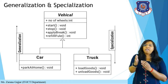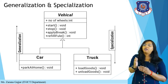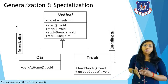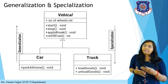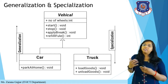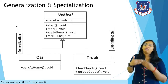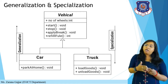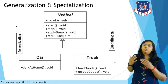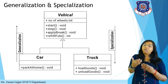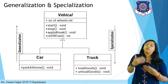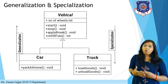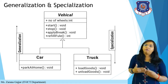In the diagram, the vehicle class is written in italic format, which means vehicle is an abstract class. It has a second compartment for attributes — number of wheels — defined as an integer type since vehicles are countable. The operations or methods that can be performed on the vehicle class are start, stop, apply brake, and refill fuel.